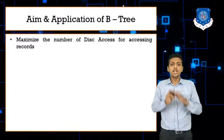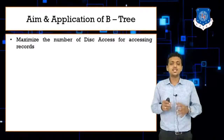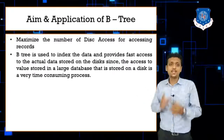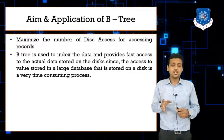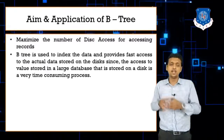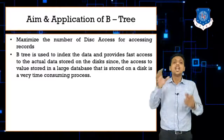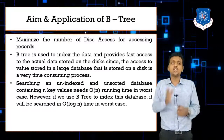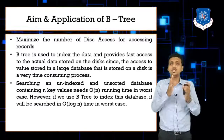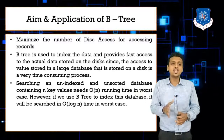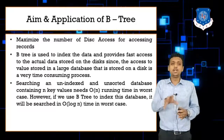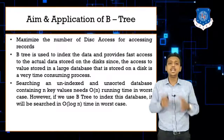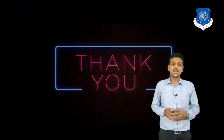The aim of B-tree: it maximizes the number of disk accesses for accessing records, and it is used to index data and provide fast access to actually stored data. In one node we can store multiple keys, increasing search, insertion, and deletion capacity. For unsorted data, the worst-case time complexity is O(n), but with a B-tree it becomes O(log n), which is why we use the B-tree. Thank you.